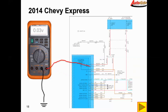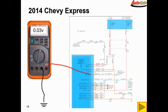Now let's hop over to the grounds. On the first ground we have 0.03 volts — that's good. On the second ground we also have 0.03 volts. So it appears that the powers and grounds on this vehicle check out fine.